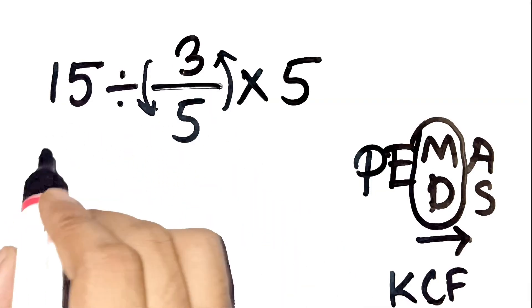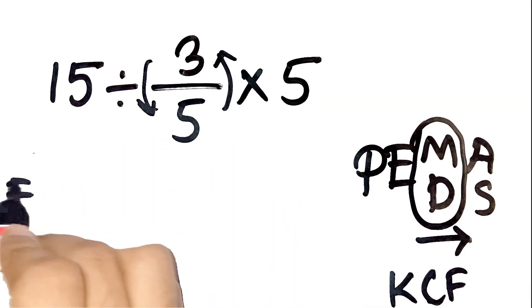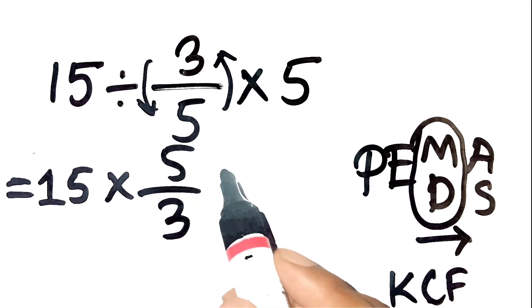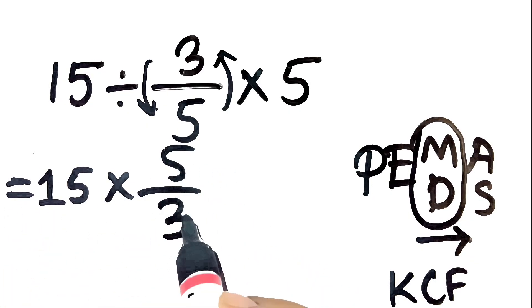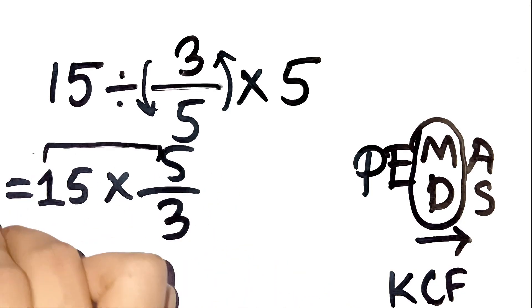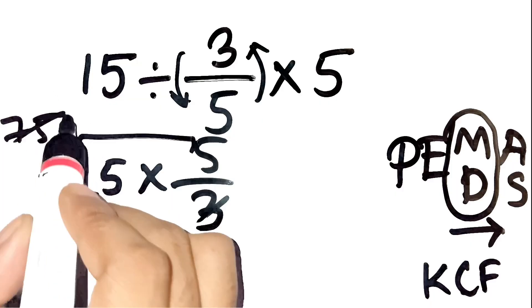So 15 divided by 3 over 5 becomes 15 times 5 over 3. Let's do it carefully. Step 1, 15 times 5 over 3. Multiply 15 times 5 equals 75, and then divide by 3 gives 25.